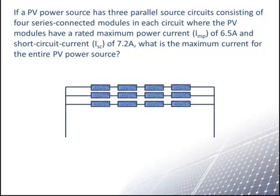The first thing to do here is to find the current for each string. Since each string has only series connected modules, the current for each string is that of just one module. NEC 690.6A1 tells us that the maximum photovoltaic source circuit current is calculated as the module rated short circuit current multiplied by 125%. Multiplying the 7.2 amps times 1.25 gives a maximum source circuit current of 9 amps.